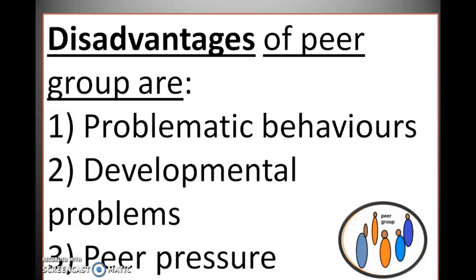The second disadvantage is developmental problems. Suppose there is a group of eight students. Out of eight students, two students are not able to speak their mind properly in front of the others. Then they are bullied, they are abused, and sometimes they have to bear the brunt of anger of their friends. In that condition, students who have been bullied by their peer group members will find it difficult to socialize in the coming years of their life. That is called a developmental problem.